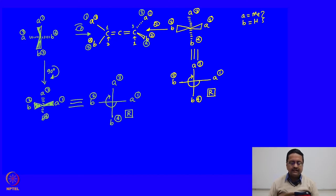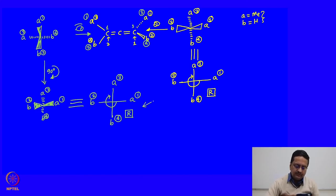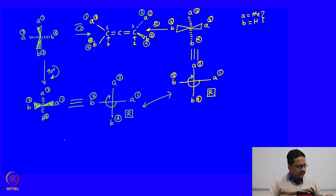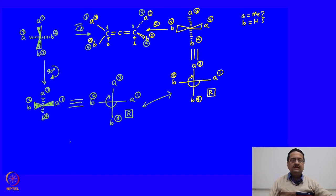A particular molecule looked at from either side turns out to be the same absolute configuration. Therefore, this molecule is the R isomer — specifically, 1,3-dimethylallene. In the following class we will try to find out what would be the S isomer.